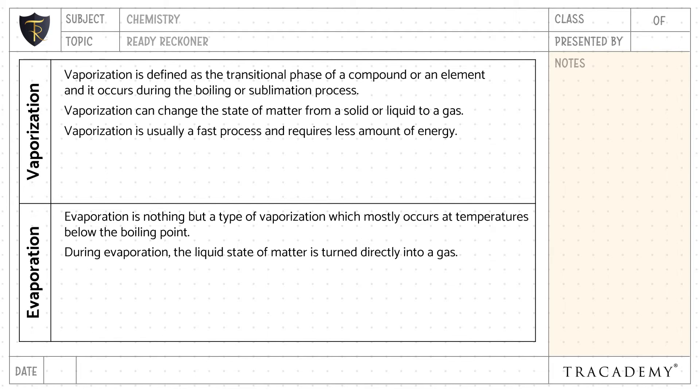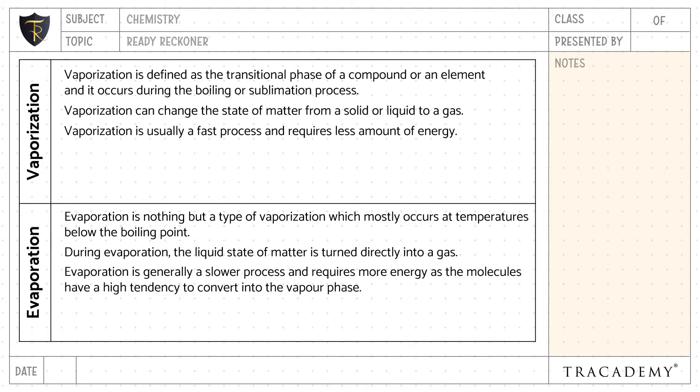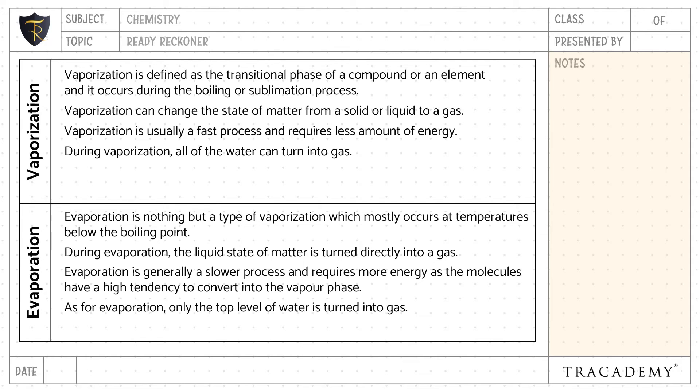Vaporization is usually a fast process and requires less energy, whereas evaporation is generally a slower process and requires more energy, as the molecules have a high tendency to convert into the vapor phase. During vaporization, all of the water — the complete quantity — can turn into a gas, whereas for evaporation only the top surface of water molecules is turned into gas.